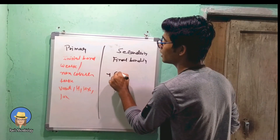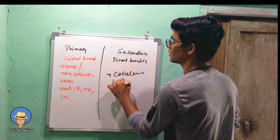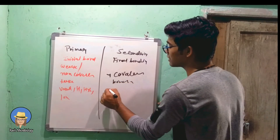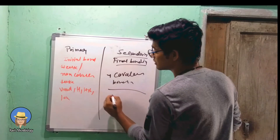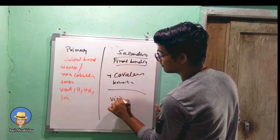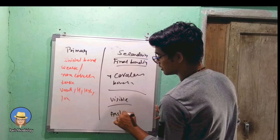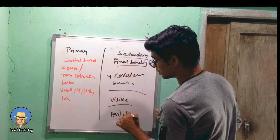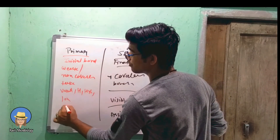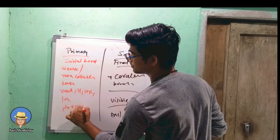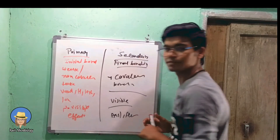While in the secondary stage, covalent bonding occurs, so this stage is very crucial. In the secondary stage, visible effects are shown, like agglutination and flocculation. In the primary stage, no visible effects are shown.